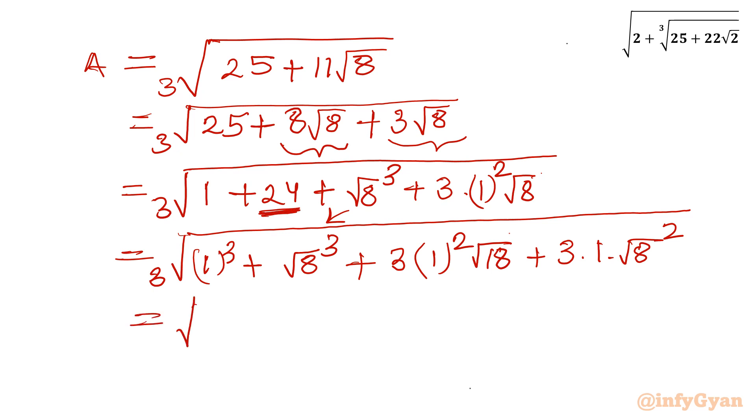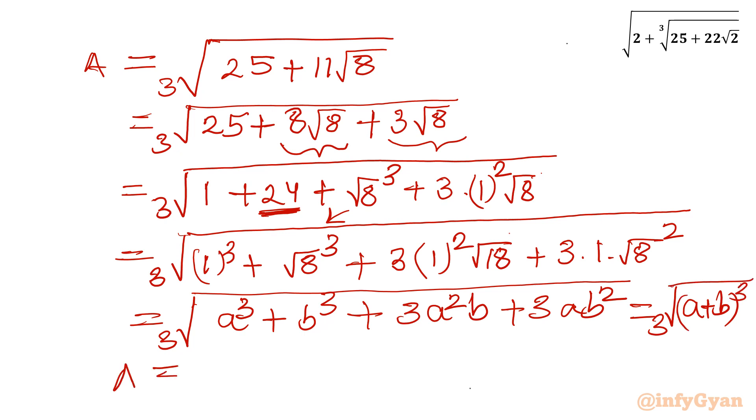So this is one identity. You can see A cube plus B cube plus 3A square B plus 3AB square. So we can write here A plus B whole cube. So let me write cube root A plus B whole cube. So I can write A equal to cube root, what is A? 1. What is B? Square root 8 whole cube. Now we can cancel cube and cube root. Now it is left with 1 plus square root 8. This is our A.